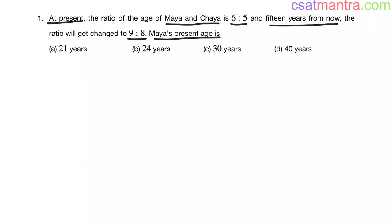Maya's present age should be a multiple of 6. 21 is not a multiple of 6, and 40 is not a multiple of 6. So options A and D are eliminated.